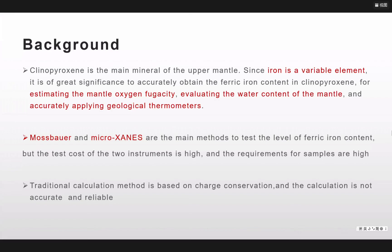There are two ways for us to get the accurate content of the ferric ion in CPX. That is the Mossbauer and the XANES. But these two methods cost a lot of money and they have high requirements for the samples, so it's not very commonplace.